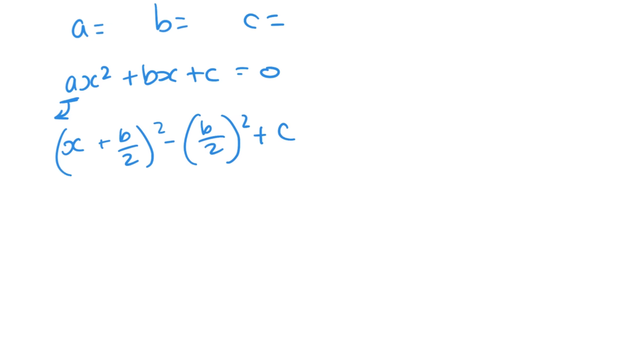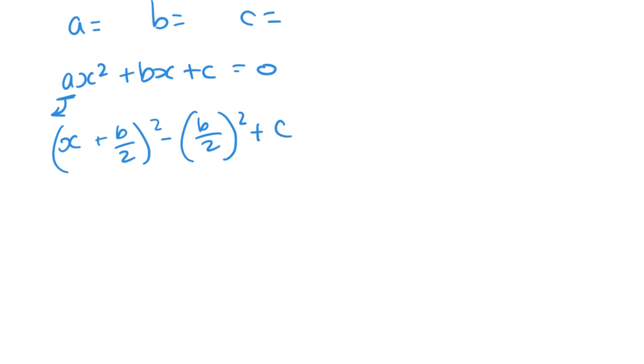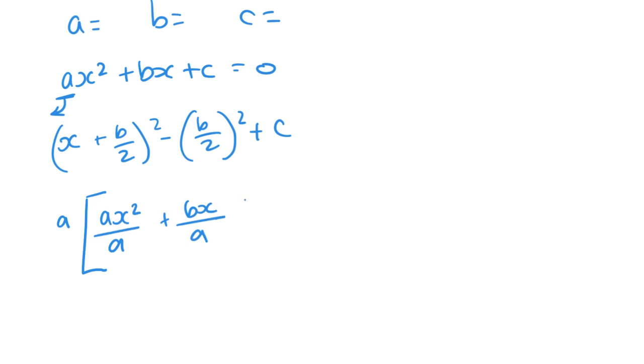If the coefficient is not 1, so it could be negative 1 or it could be 2, if this coefficient is not 1, you need to divide everything by a. So you're going to get ax squared divided by a plus bx and then divide it by a, plus c and divide it by a. From there, what's going to happen is your a's are going to cancel and then you can carry on with how we normally complete the square.